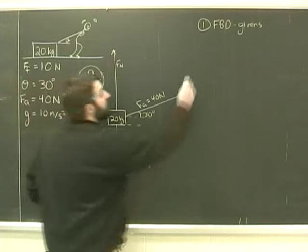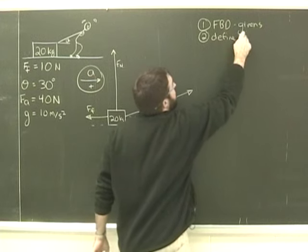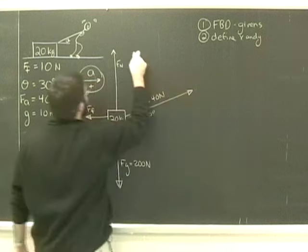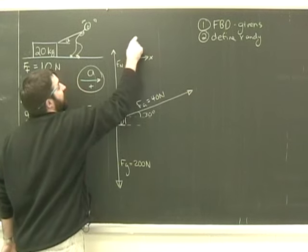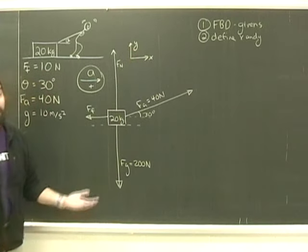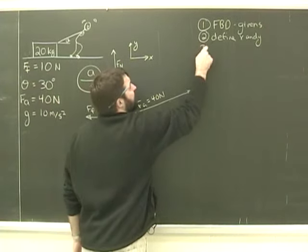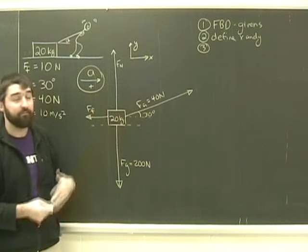Second step is to define the x and y directions. So I'm going to call to the right, which is the direction of acceleration, I'm going to call that x, and therefore I'm going to call up y. Having done that, I look at my free body diagram. All the forces are in the x and y direction already, except for Fa.